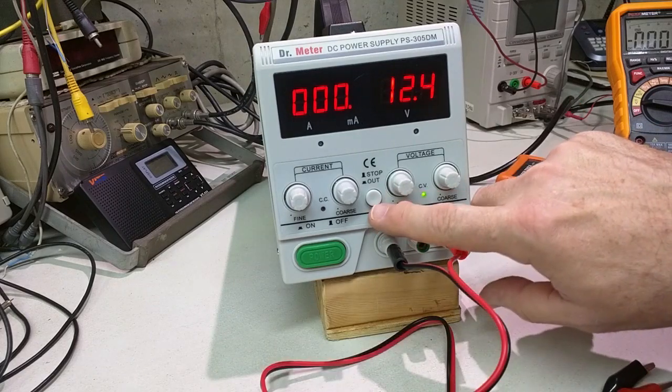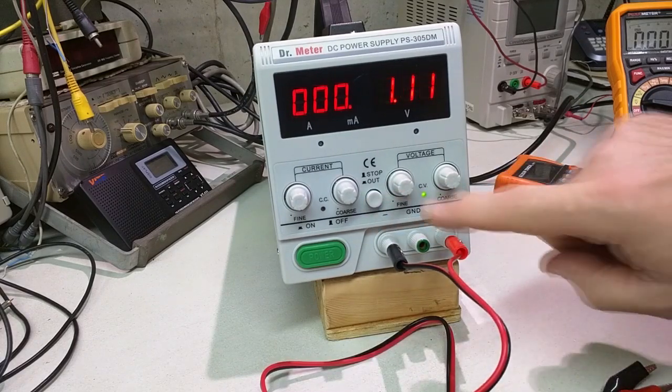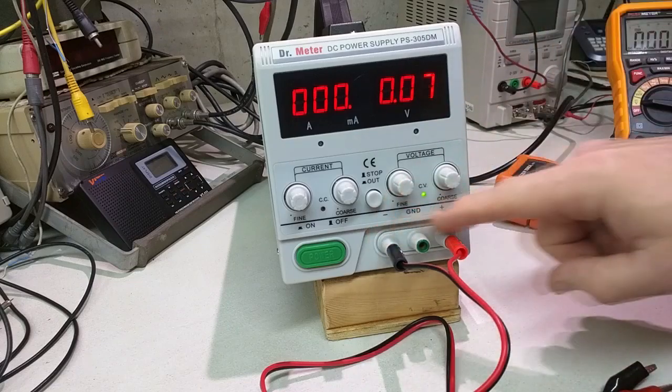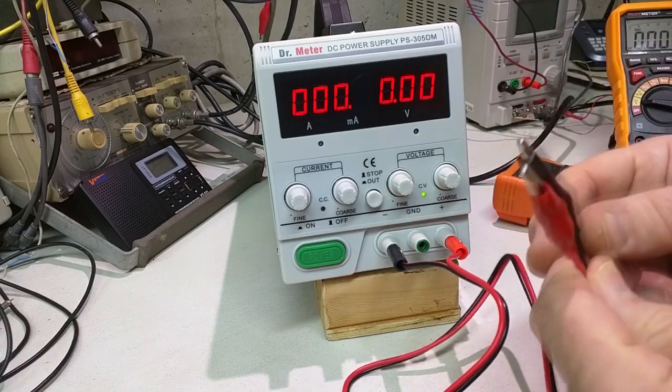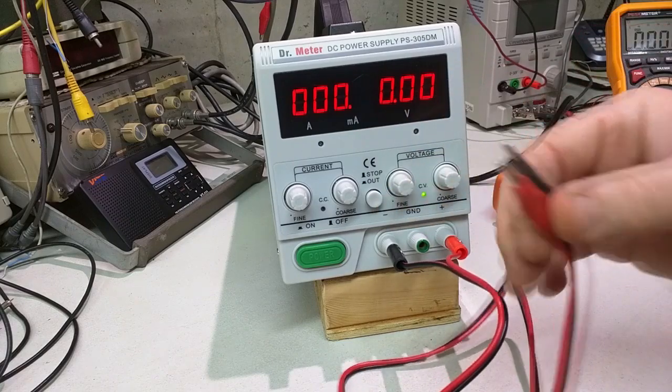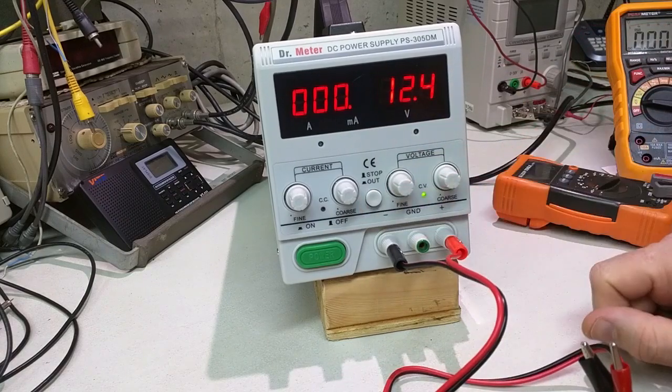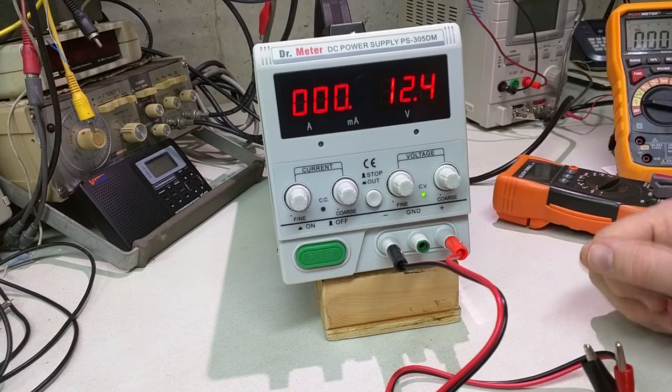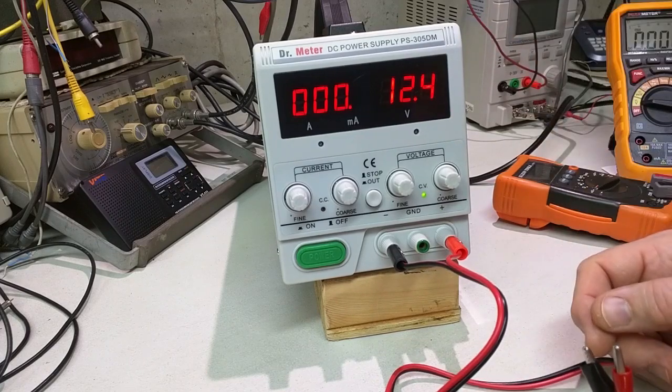I want to mention this stop-out button right here. What that does is it disconnects the output from the test clips. So you see how it went to zero? That way you could have it on your circuit, and then you could essentially put the voltage there once you've got the voltage all stabilized. That's nice.